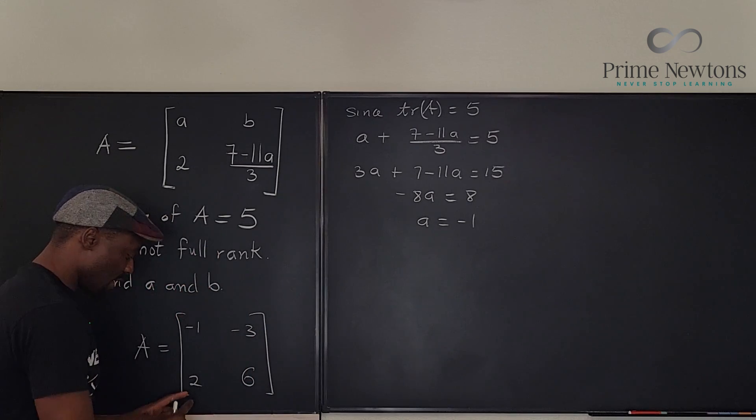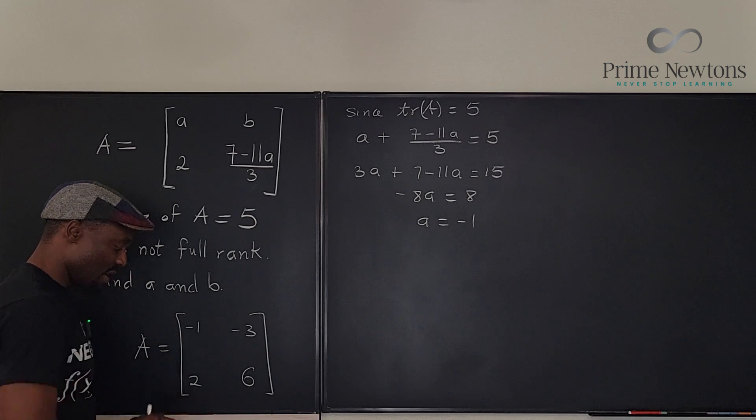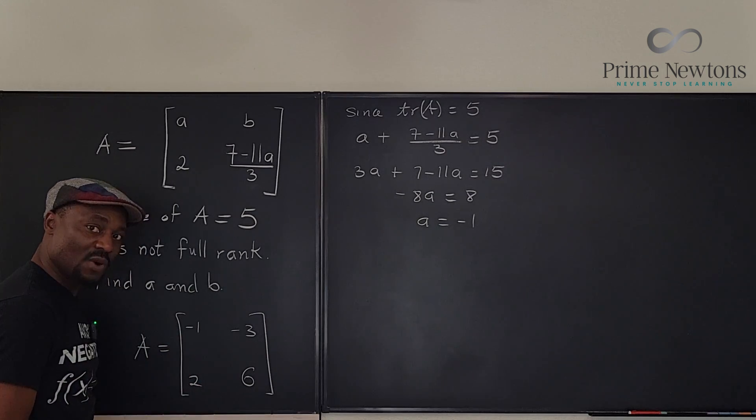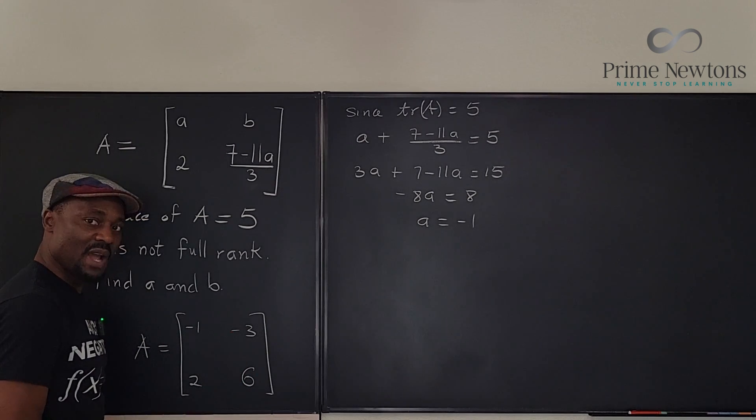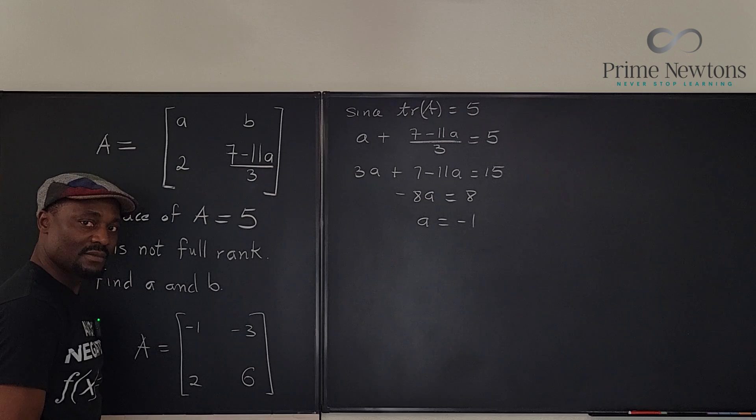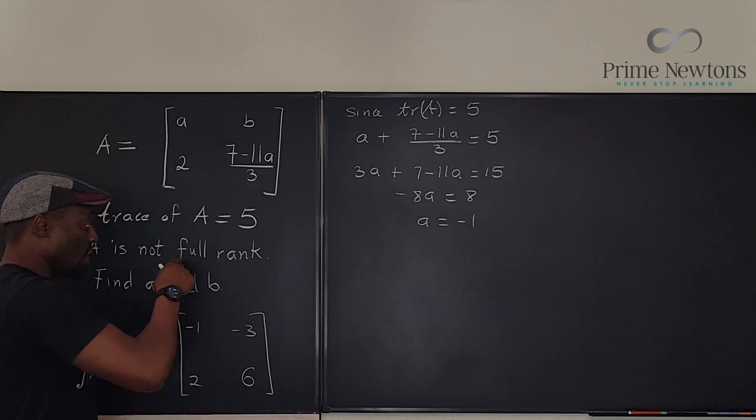And if you want to go this way, what did I do to two to get minus one? Well, I multiplied it by negative one half. Negative one half times two gives me minus one. Negative one half times six is going to give me minus three.